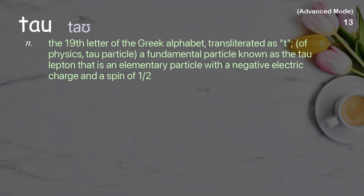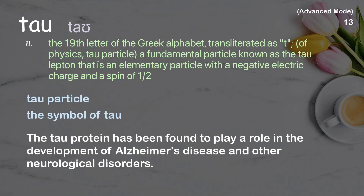Tau: The 19th letter of the Greek alphabet, transliterated as T. In physics, the tau particle is a fundamental particle known as the tau lepton — an elementary particle with a negative electric charge and a spin of one half. Examples: Tau particle, The symbol of tau. The tau protein has been found to play a role in the development of Alzheimer's disease and other neurological disorders.